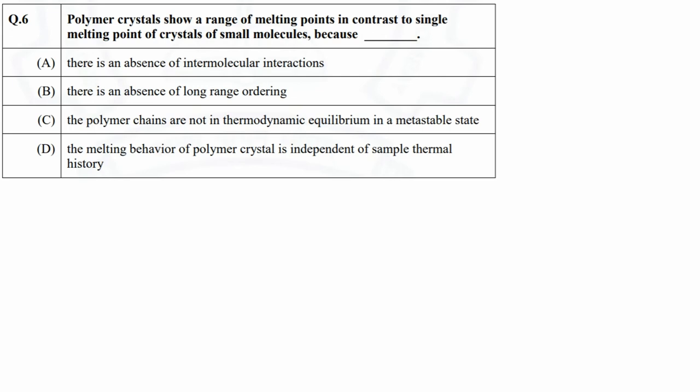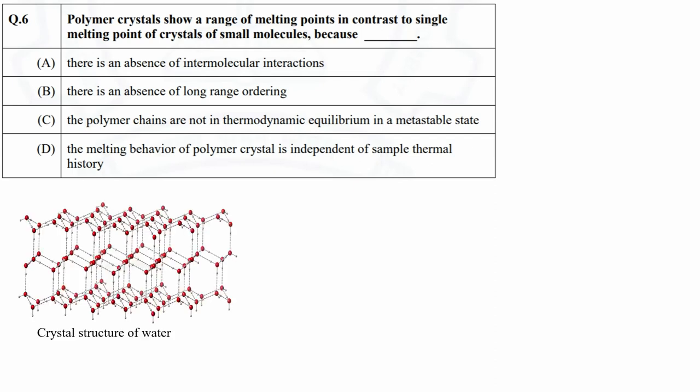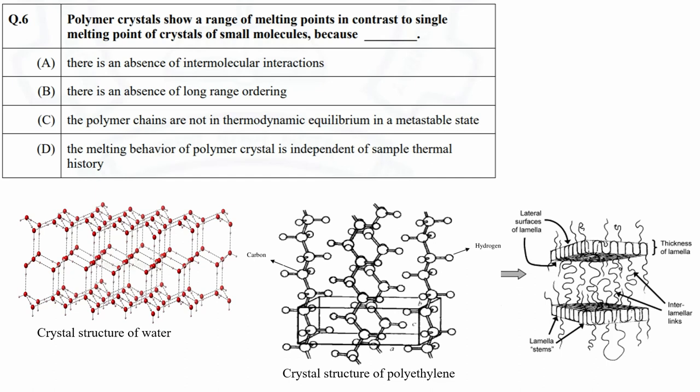In question 6, identify the reason why small molecule crystals show single melting point, but polymer crystals show a range of melting points. I think this is a very basic question that can help us clearly understand the difference between behavior of small molecule materials and macromolecules like polymers. During crystallization of small molecules, the whole molecule orients in a specific manner forming exactly the same bonds between neighboring molecules. However, when a macromolecule like a polymer chain forms crystals, the whole molecule, that is the whole chain, cannot be part of the crystal.